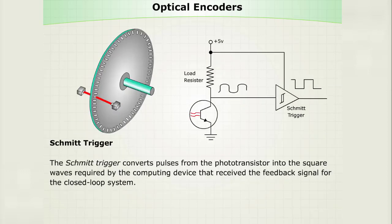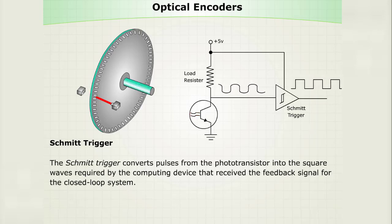The Schmitt trigger converts pulses from the phototransistor into the square waves required by the computing device that receives the feedback signal for the closed-loop system.